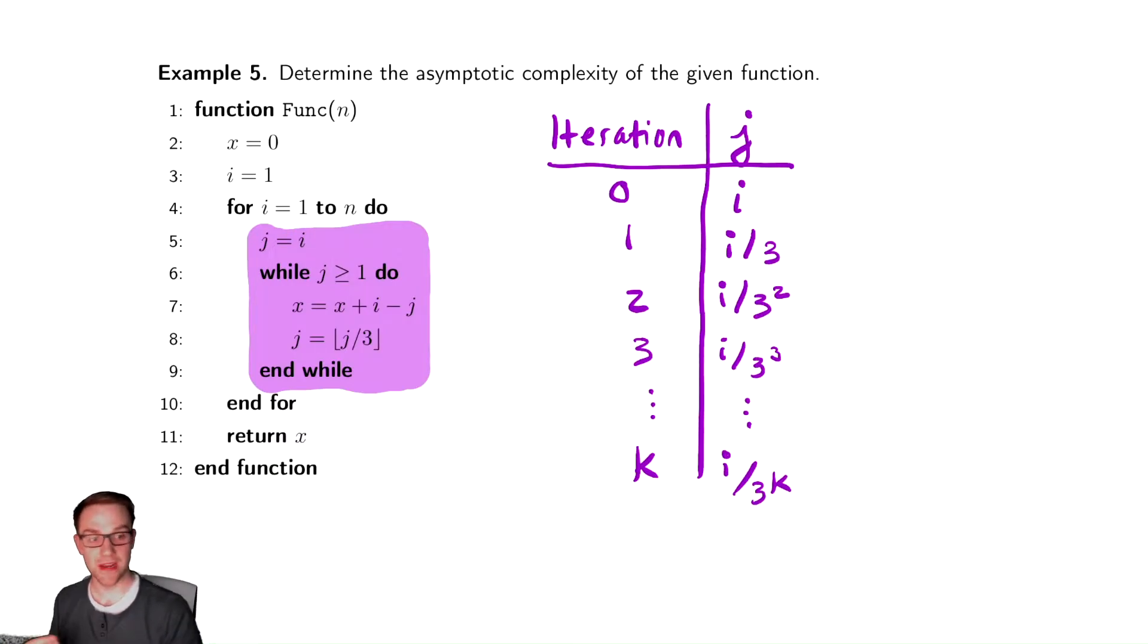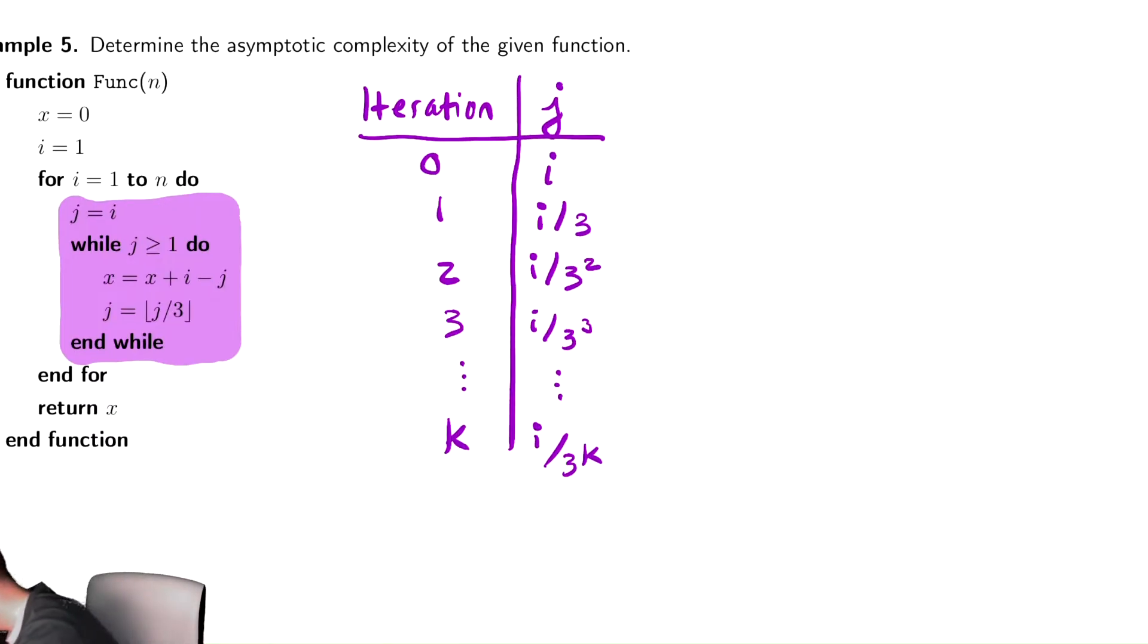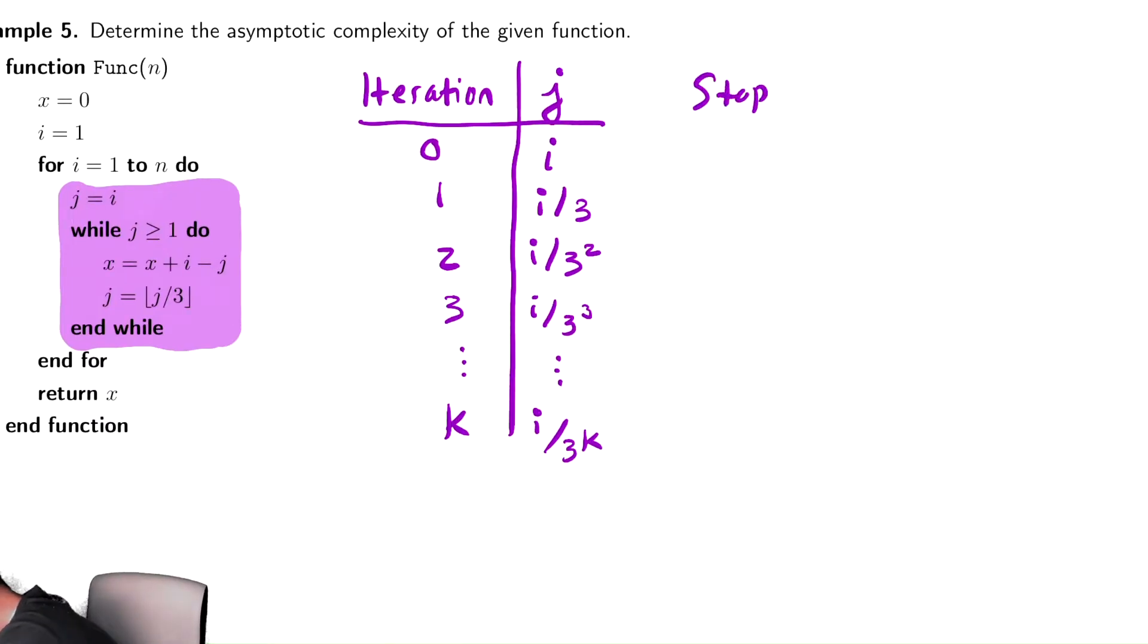Now I need to find out when does that expression, i divided by 3 to the k, equal the stopping condition of the while loop. This code will stop when i divided by 3 to the k equals 1. We multiply by 3 to the k and we have i equals 3 to the k. We take a log base 3 of both sides and get k equals log base 3 of i.